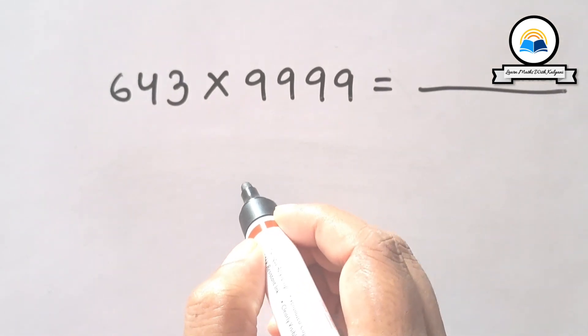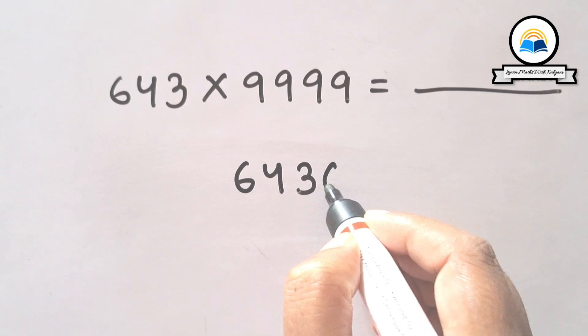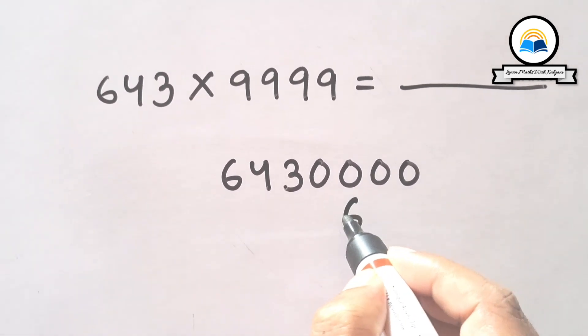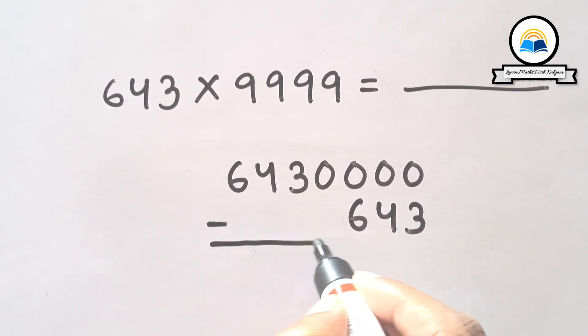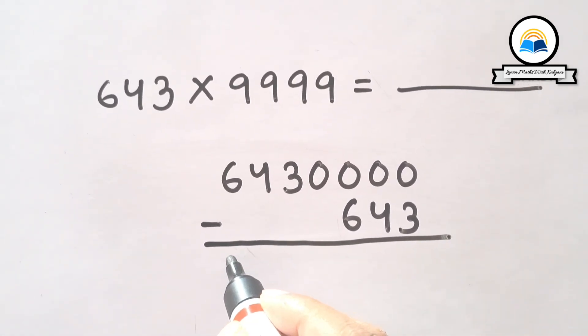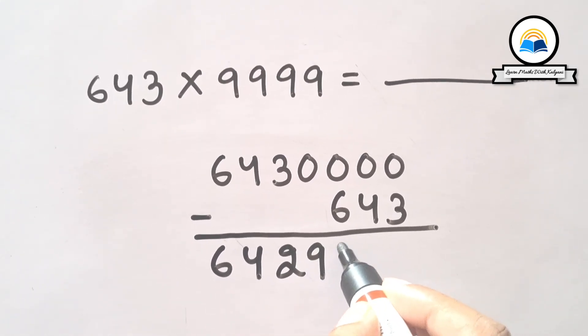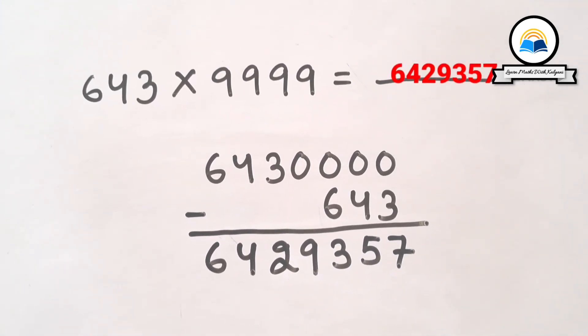643 times 9999: 9999 has four digits, so add four zeros and then subtract 643. 64 lakh 30,000 minus 643 equals 64 lakh 29,357. So the answer is 64 lakh 29,357.